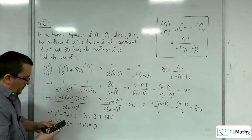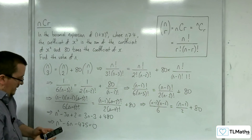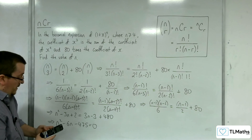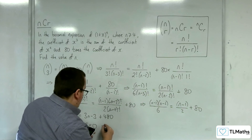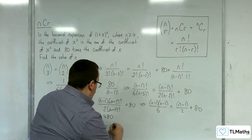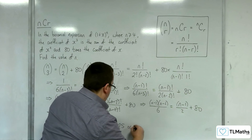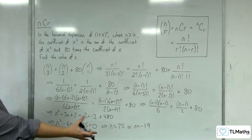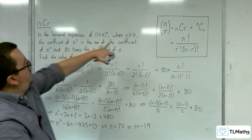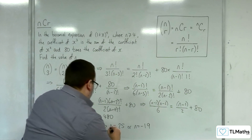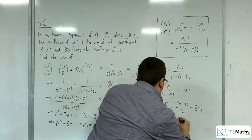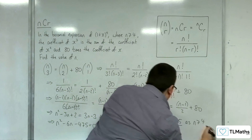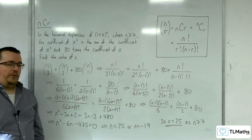I just need to solve this quadratic. Factorising gives (n-25)(n+19) equals 0, so n equals 25 or n equals minus 19. But of course n can't be minus 19 — it has to be positive and in fact greater than or equal to 4. So n equals 25, as n is greater than or equal to 4. That is the solution to this problem.